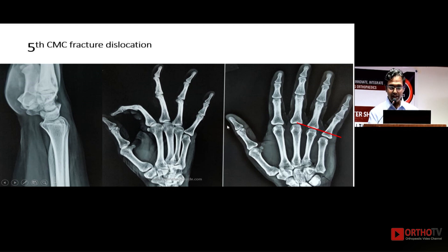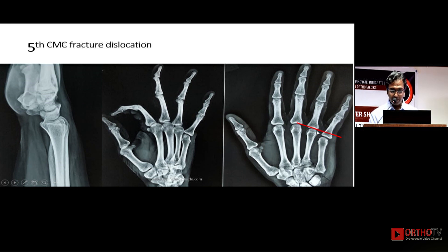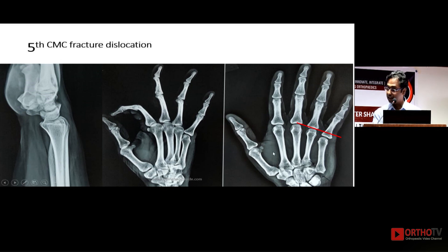Here there is a dislocation of the fifth carpometacarpal joint — you can see that the fifth metacarpal has come down. Drawing the tangential line, you will appreciate that the metacarpophalangeal joint is proximal and subluxated proximally. Always remember it can be only a dislocation, or there can be a small flake fracture, as in this case — making it a fracture dislocation.